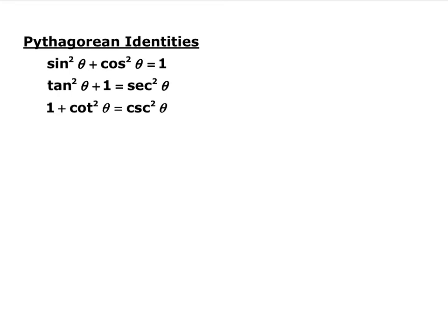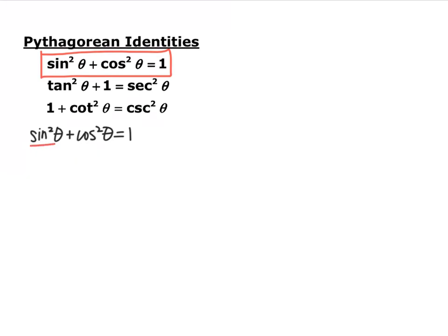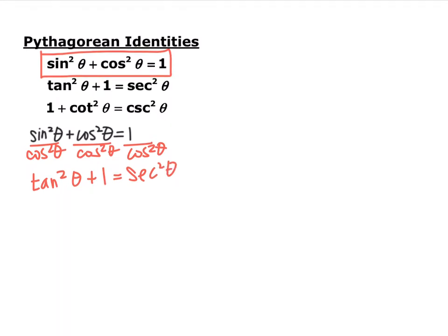This next set is the Pythagorean identities — pause the video and write these down. The most important one to memorize is: sine squared theta plus cosine squared theta equals 1. From that, you can derive the others. Dividing everything by cosine squared theta gives: sine squared over cosine squared is tangent squared, cosine squared over cosine squared is 1, and 1 over cosine squared is secant squared — giving tangent squared plus 1 equals secant squared.